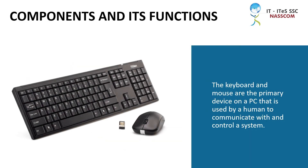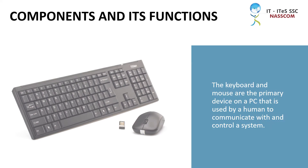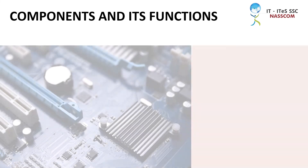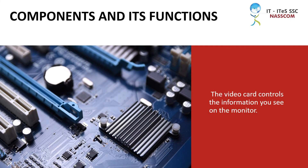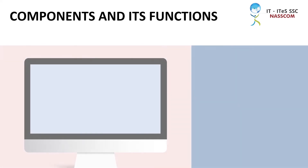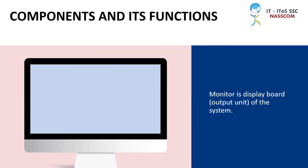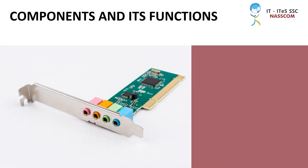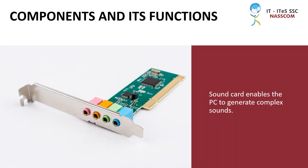The keyboard and mouse are the primary devices on a PC used by a human to communicate with and control a system. The video card controls the information you see on the monitor. The monitor is the display board of the system. The sound card enables the PC to generate complex sounds.